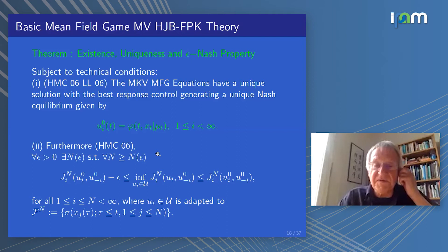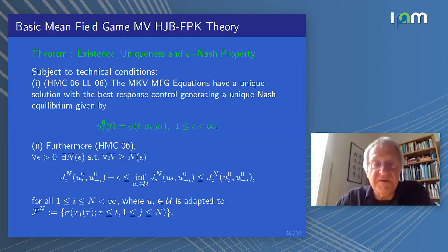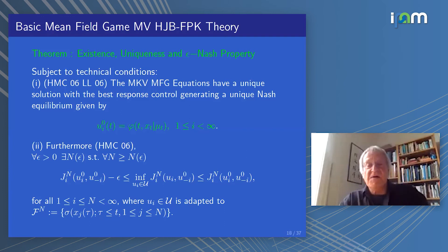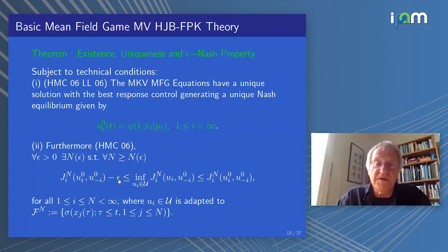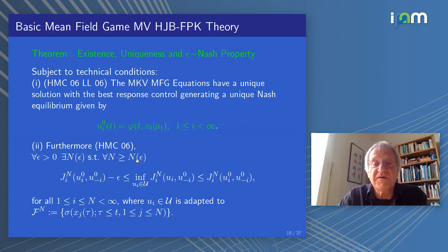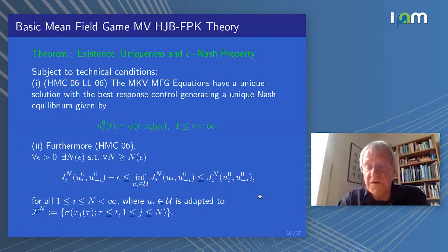Furthermore, we have the epsilon Nash property: when all agents except one are using the mean field game solution, no more than an epsilon improvement can be gained by unilateral behavior, where that epsilon will go to zero as the population goes to infinity. For every epsilon, there exists a population size such that all greater populations will result in this set of inequalities holding. It is the epsilon Nash property which justifies the application of mean field game theory to finite population problems.